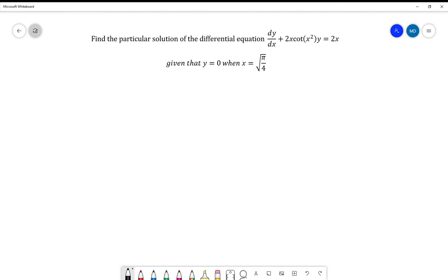Okay, so as always we'll check it's in the right form. Is it in the form dy/dx + P(x)y = Q(x)? And the answer is yes it is, with P(x) = 2x cot(x²).